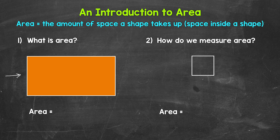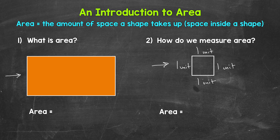How do we measure area? We actually measure area using squares. So looking at this square right here, this is a special type of square — the length of each side is one unit. A unit can be an inch, a foot, a meter, a centimeter, and so on. Any unit of length. But for this video, we're not going to be using specific units, we're just going to say unit. So again, all of these sides measure one unit. This is what we call a unit square.